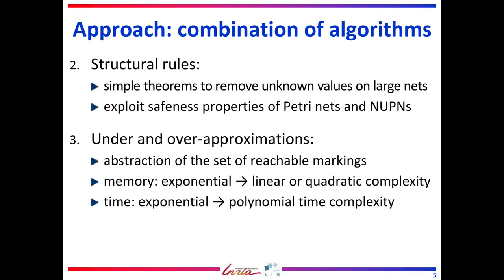The second algorithm is based on structural rules, which are theorems exploiting the safety properties of PetriNets and their invariants. For example, on a safe net, only a transition whose input places are a strict subset of its output places is dead. The third algorithm performs approximation, either under-approximation or over-approximation. The set of reachable markings is abstracted in various ways, replacing an exponential cost in memory by a linear or quadratic cost. The time complexities also reduce from an exponential cost to a polynomial cost.